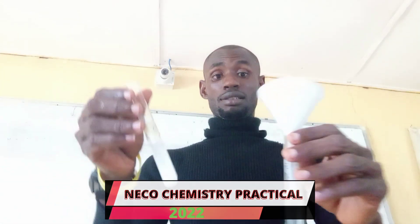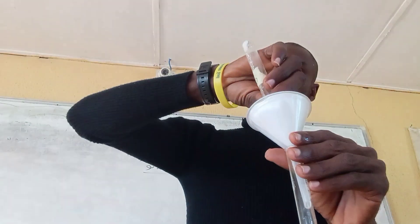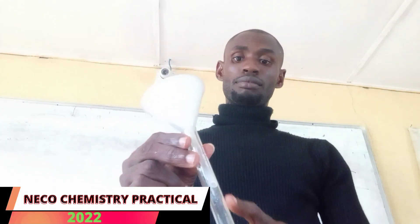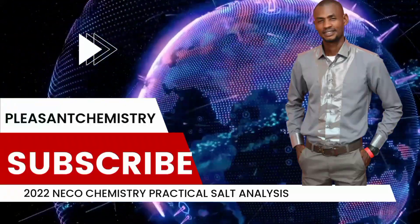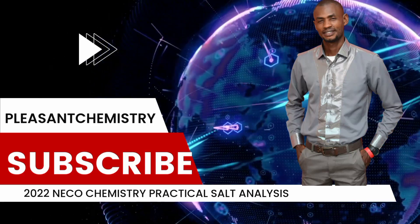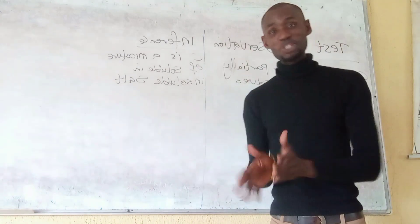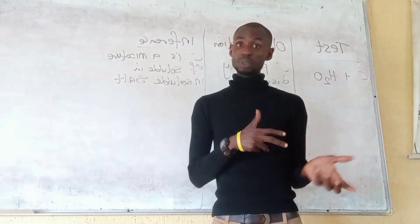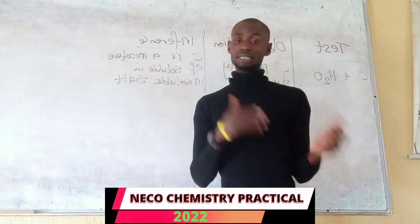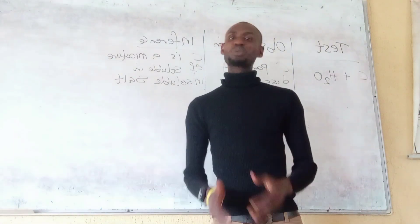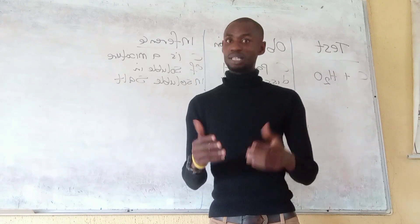Since C did not dissolve completely, we filter it. We put filter paper inside the funnel and wait for the filtrate to collect into the test tube, while the residue stays on top of the filter paper. We keep both the filtrate and the residue and will carry out tests on each.